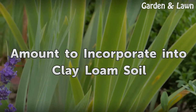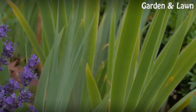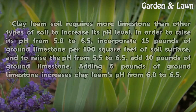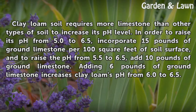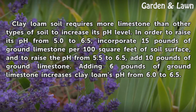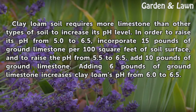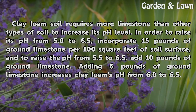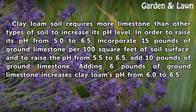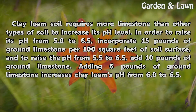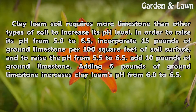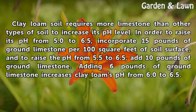Clay loam soil requires more limestone than other soil types to increase its pH level. To raise its pH from 5.0 to 6.5, incorporate 15 pounds of ground limestone per 100 square feet of soil surface. To raise the pH from 5.5 to 6.5, add 10 pounds. Adding 6 pounds of ground limestone increases clay loam's pH from 6.0 to 6.5.